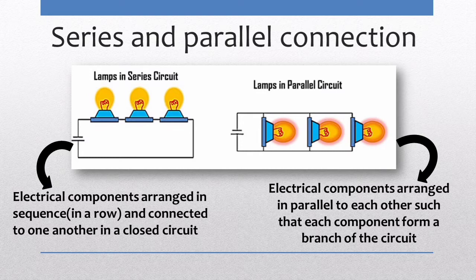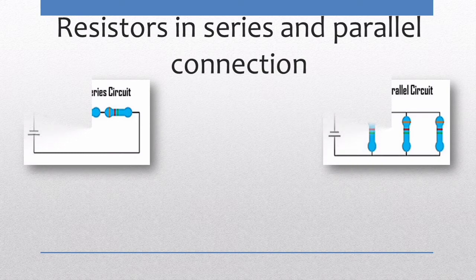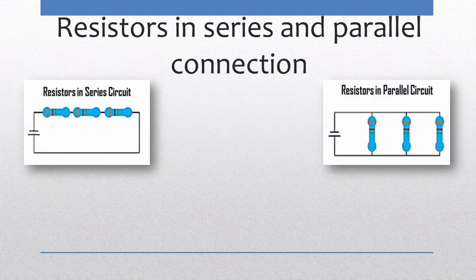Resistors can be combined in two ways — in series and in parallel. When two or more resistances are connected end to end they are said to be connected in series, and when resistances are connected between the same two points they are said to be connected in parallel.